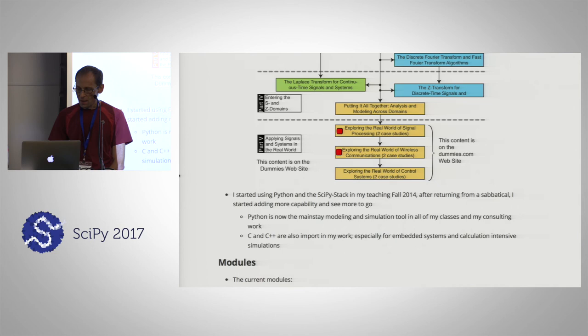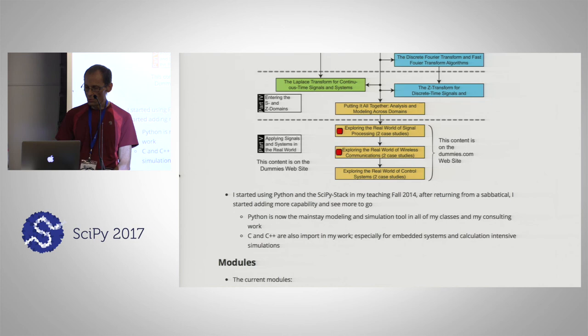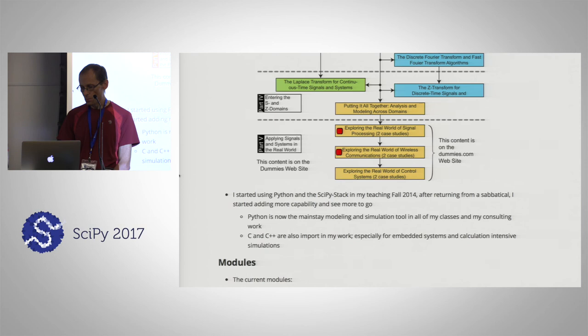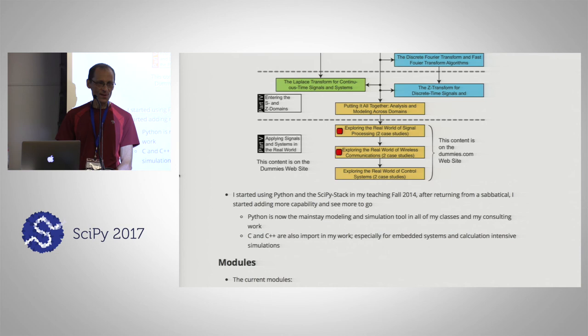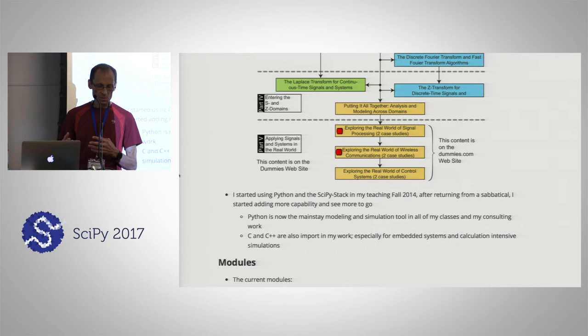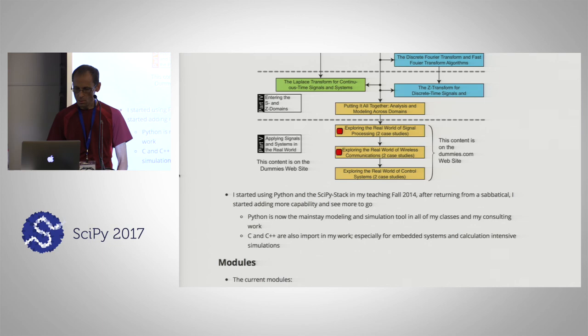Another part of the book on the dummies website is some case studies — two on signal processing and some wireless communications examples. And then there are a couple of control system examples, because control systems is another part of the signals-and-systems stool, as I think of it. It's a stool composed of three legs: control systems, pure signal processing, and communications-type signal processing. That is the signals-and-systems foundation you build on top of.